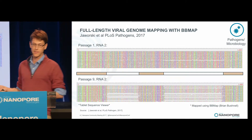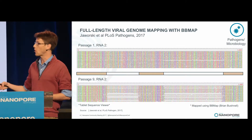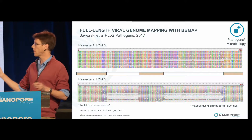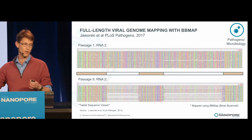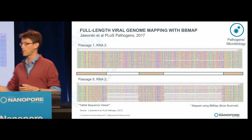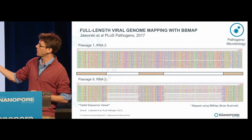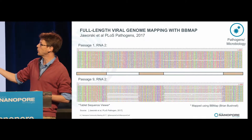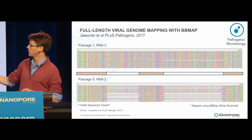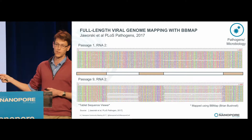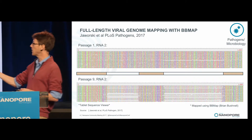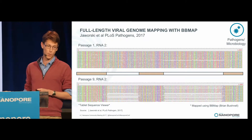We used a cDNA amplicon approach to get full-length reads of our genomes. Because the two RNAs are very short, we could get thousands of reads, giving us very good coverage in each viral population. In our early passages, we get full-length sequences for RNA2. But in later passages, you can see large deletions of several hundred nucleotides in the middle of the genome, and what you may notice from this alignment is that these deletions are often correlated with one another.